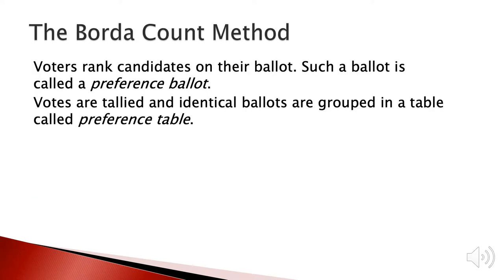The second method is the Borda count method. Before introducing this method, we need two definitions: the preference ballot and the preference table. Voters rank candidates on their ballot, and such a ballot is called a preference ballot. Votes are tallied and identical ballots are grouped in a table, and then this table is called the preference table.